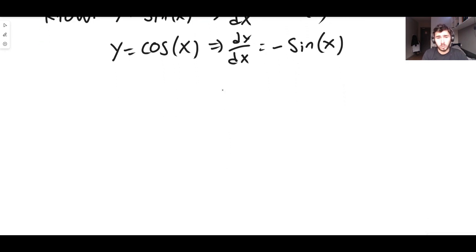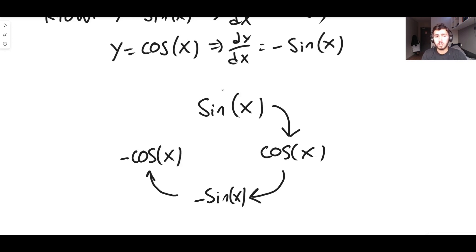So what you end up getting is this kind of circle. So sin x differentiates to cos x, cos x differentiates to minus sin x. Therefore, the derivative of sin x is cos x, and there's a minus sign in front, so the derivative of minus sin x differentiates to minus cos x. And cos x differentiates to minus sin x, so minus cos x differentiates to minus minus sin x, which is positive sin x.